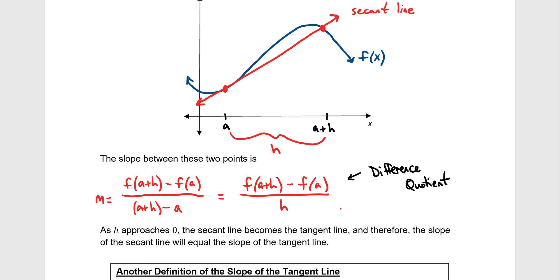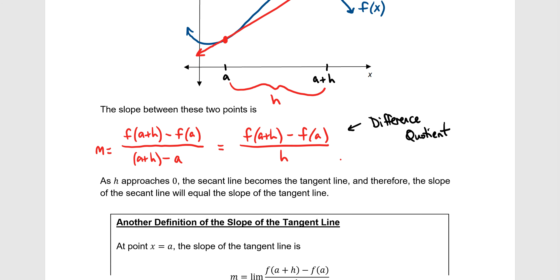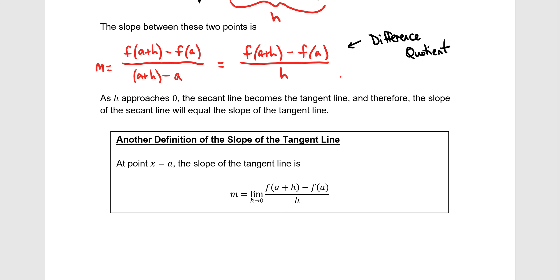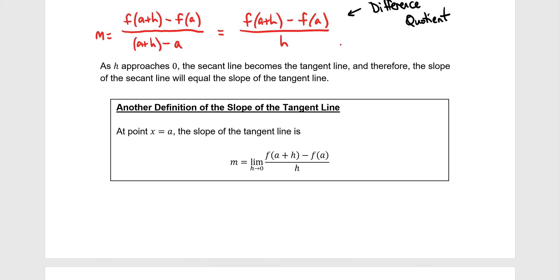This second definition is different because as the right point moves closer to the fixed left point, H — the distance between them — is approaching zero. So the slope of the tangent line at x = a is: m = the limit as h approaches 0 of (f(a + h) − f(a)) / h. This is our second definition of the slope of the tangent line.